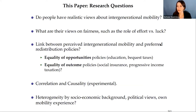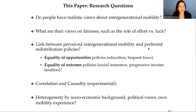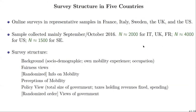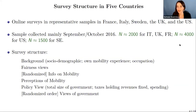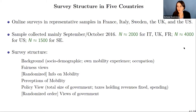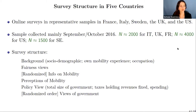We explore this link first in a correlational sense, then causally by shifting people's views on mobility experimentally. We run large-scale online surveys in five countries — France, Italy, Sweden, the UK, and the US — with samples ranging between 2,000 and 4,000 respondents, conducted around September–October 2016. Note the blatant omission of Germany, which we'll make up for in the next project.